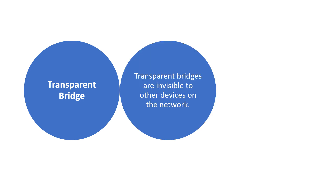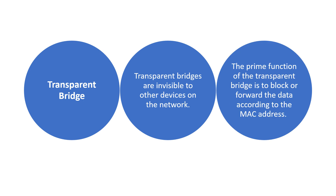First, we can see the transparent bridge. Transparent bridges are invisible to other devices on the network. The prime function of the transparent bridge is to block or forward the data according to MAC address.